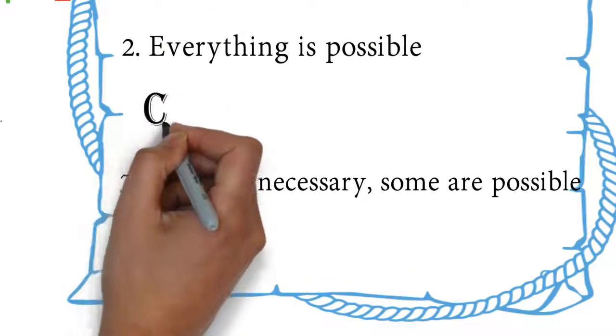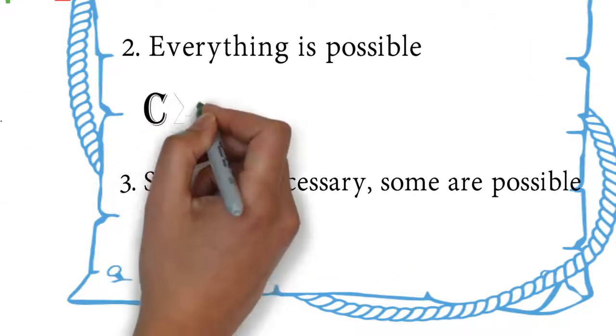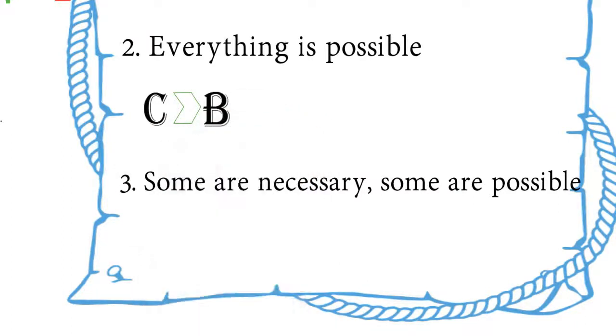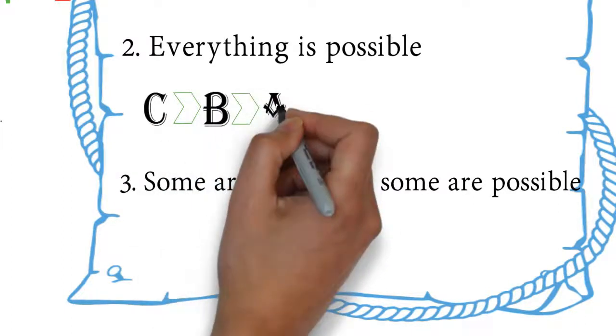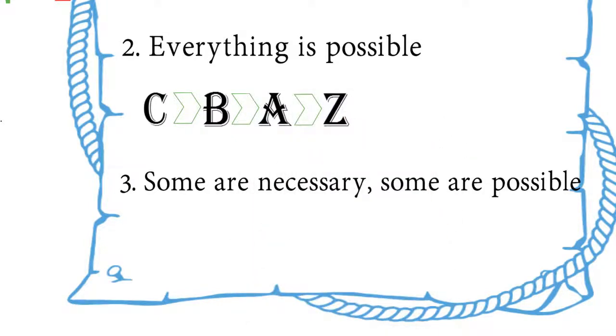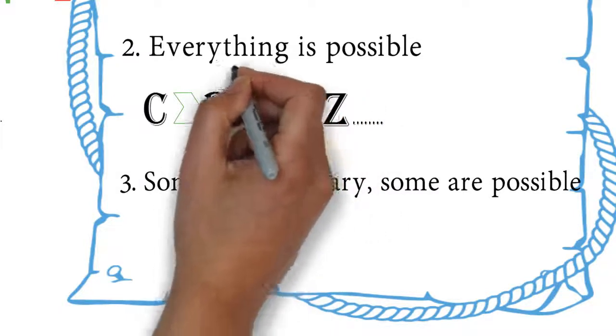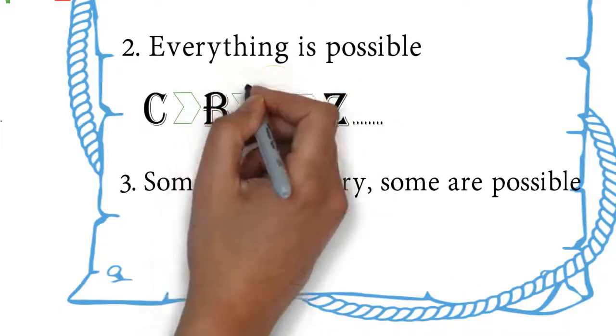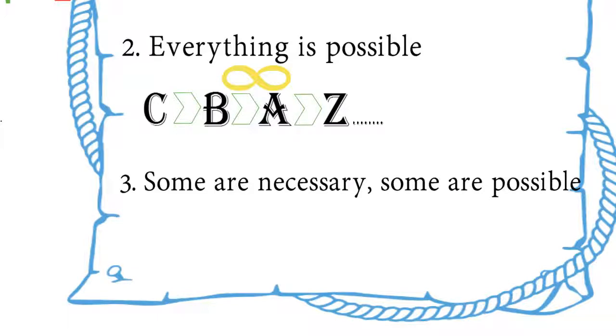Second likelihood, everything that exists is possible. It's like me saying C was caused by B, and B was caused by A, and A was caused by Z, and Z was caused by so and so. This will go on forever and this is impossible, also known as an infinite regress, because logically we know that it must stop somewhere.